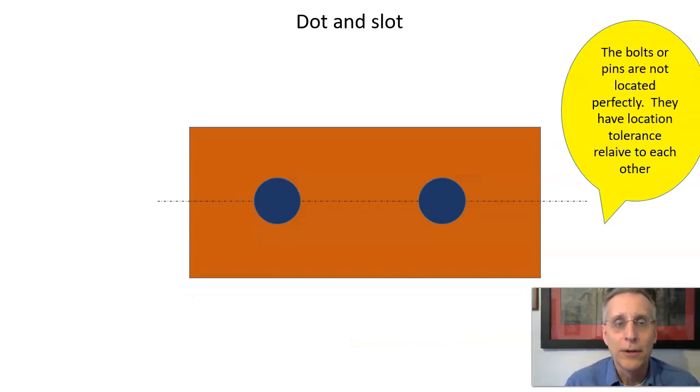So if we take a look at the brown part and the bolts or pins that come up out of it, the bolts or pins are not going to be located perfectly. They're going to have location error relative to each other. This bolt or pin can move to the right or to the left just from tolerances. Not that it's actually going to move, but it could be in all those different locations.